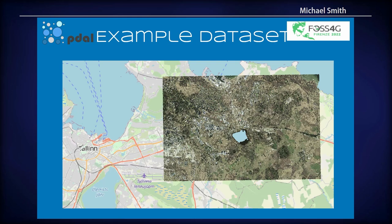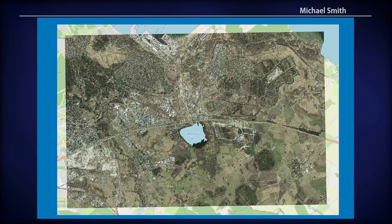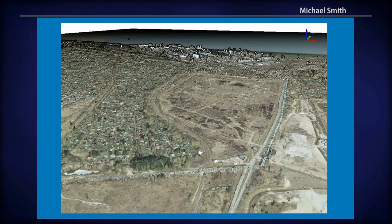Here's just an example data set from Estonia that I was able to get online. They have some very nice data sets there — all public, all with multiple dimensions, color dimensions, IR, fully classified. It's a very nice collection of data. This is output in QGIS now — QGIS has Poodle built in and can read LAS point cloud data or COPIC data, and will generate 3D views of your point cloud data right in QGIS.